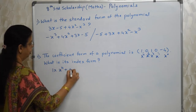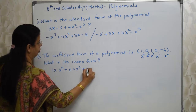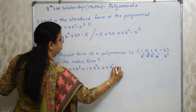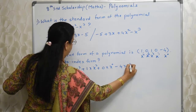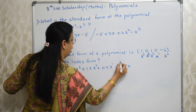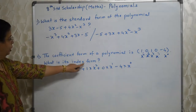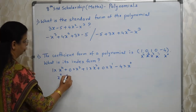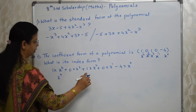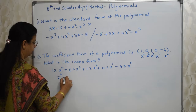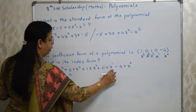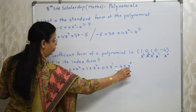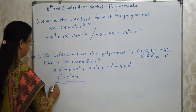So: 1 into x raised to 4, plus 0 into x raised to 3, plus 1 into x raised to 2, plus 0 into x raised to 1, minus 4 into x raised to 0. Now, 0 into anything is 0, so no need to write those terms. 1 into x squared is x squared. And minus 4 into x raised to 0 — since x raised to 0 means 1 — gives minus 4. So the index form is x raised to 4 plus x squared minus 4.